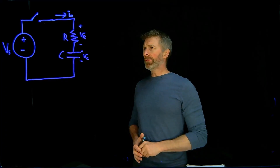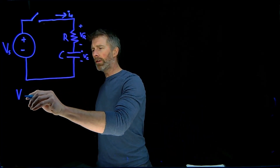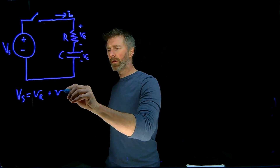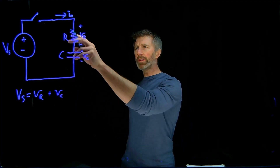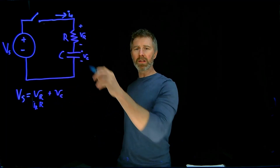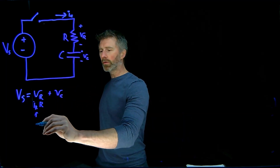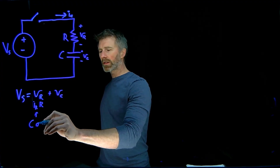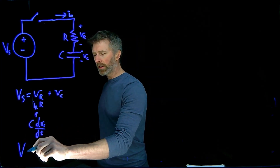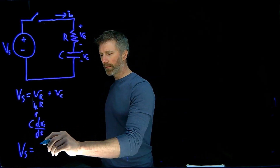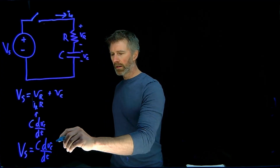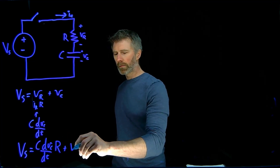To do this derivation, let's start with what we know. From Kirchhoff's voltage law, Vs equals Vr plus Vc. We know that Vr equals the current times resistance. And since Ir equals Ic, that current equals C times dVc/dt — the capacitance times the rate of change of voltage over time. So Kirchhoff's voltage law becomes: Vs equals RC(dVc/dt) plus Vc.